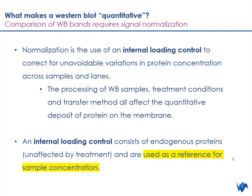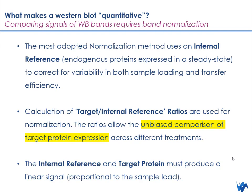Variation sources include treatment conditions, your transfer method, and even just the loading of your samples, which can cause slight variations in protein concentration across samples and across lanes. In order to correct for those variations, we use an internal loaded control as a reference within your sample. This internal reference is used to help correct for the variability in both sample loading and transfer efficiency, and you can later create a ratio between your target and your internal reference, which will be used as your normalization factor.